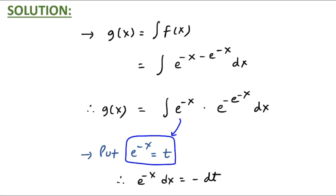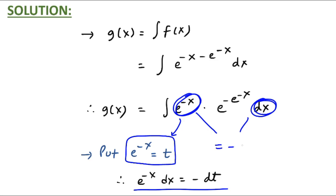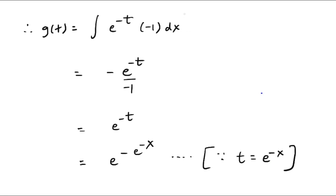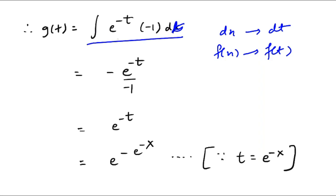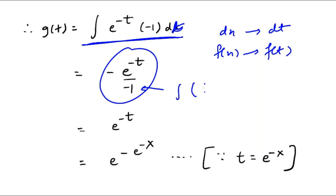Substituting e raised to minus x as t, differentiating both sides gives e raised to minus x dx equals minus dt. So e raised to minus x dx is converted to minus dt, and e raised to minus x is t. Everything is substituted perfectly — no terms left causing problems. The integral becomes the integral of e raised to minus t times minus 1 dt, which gives minus e raised to minus t upon minus 1, simplifying to e raised to minus t.